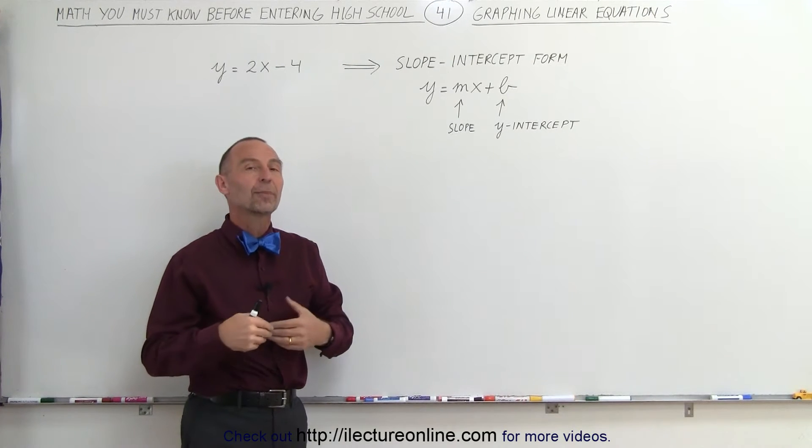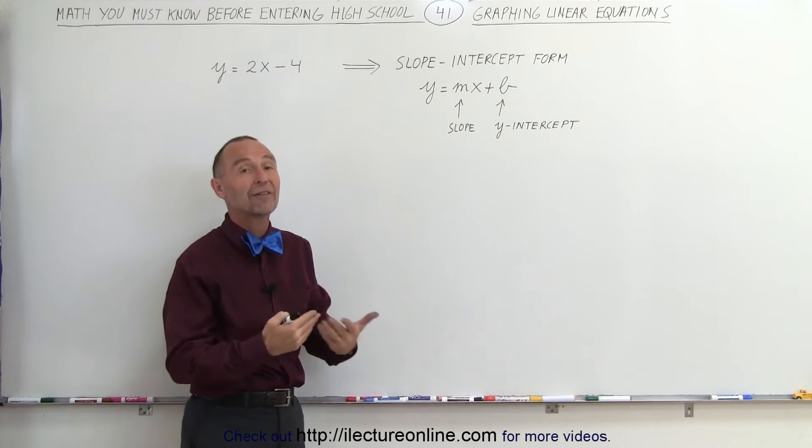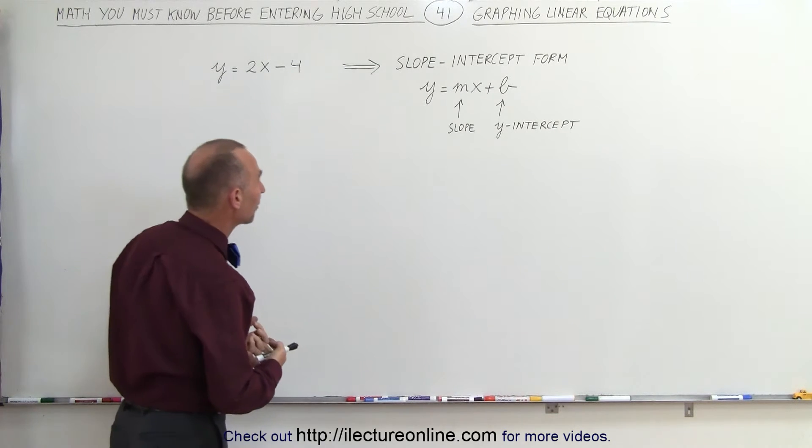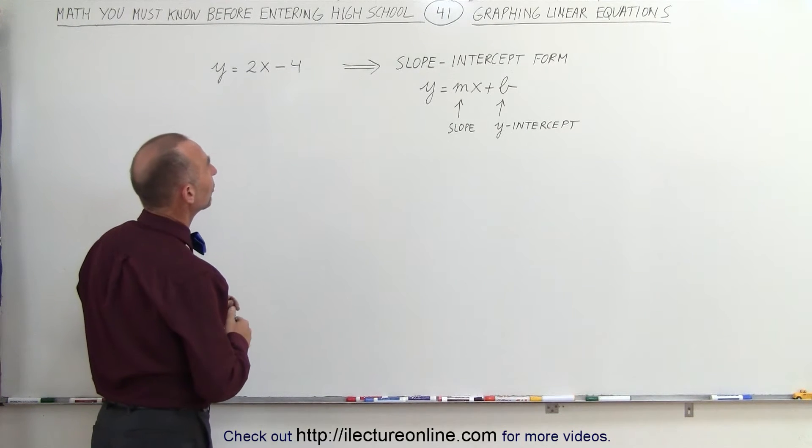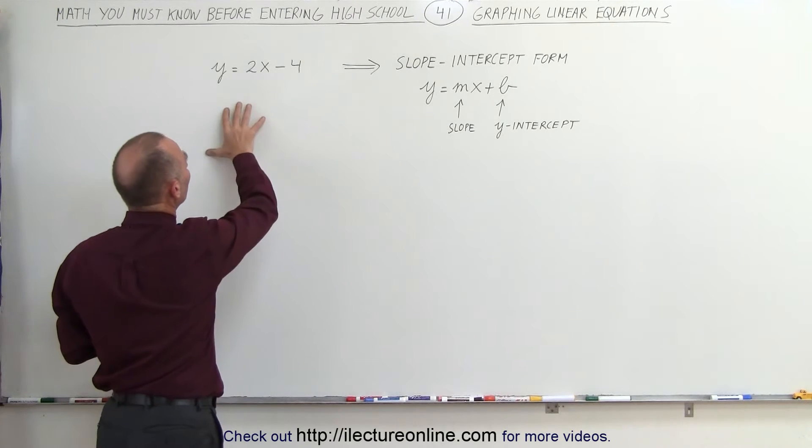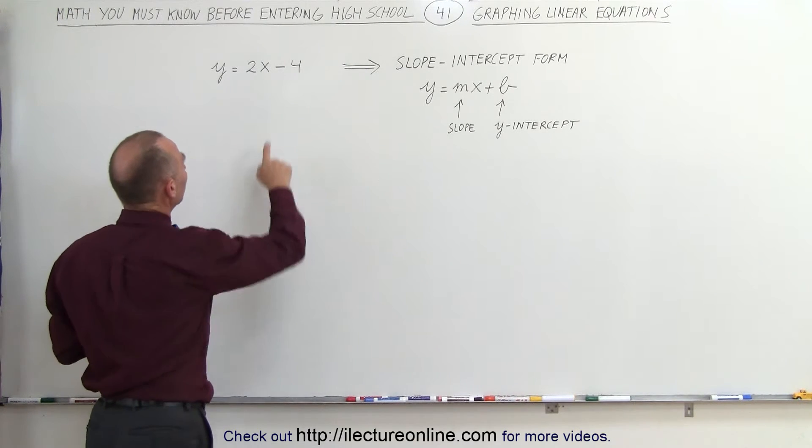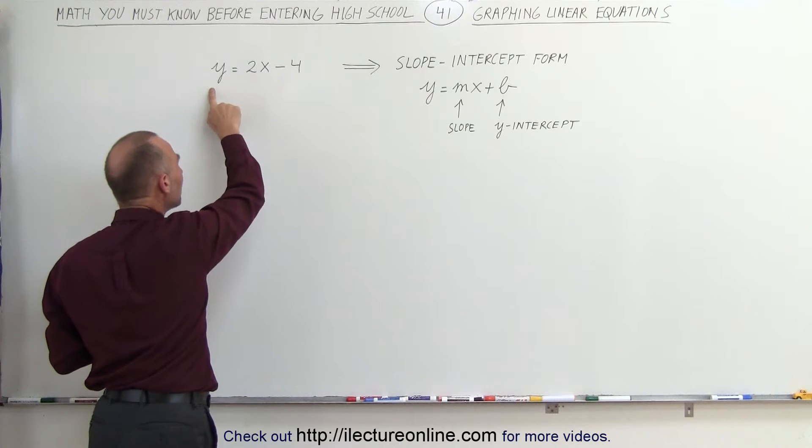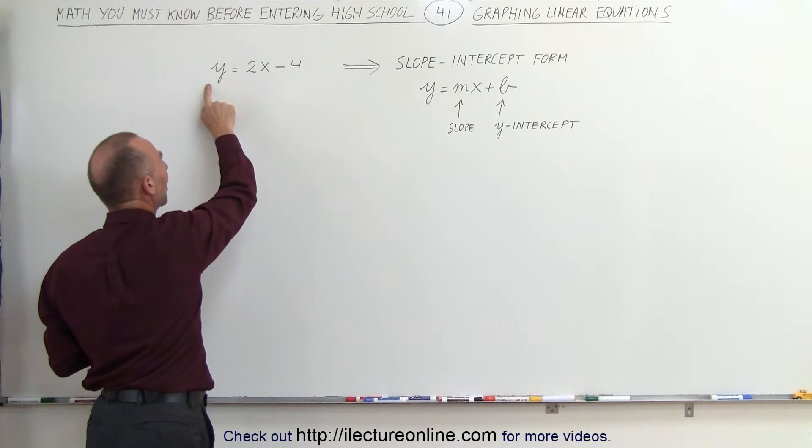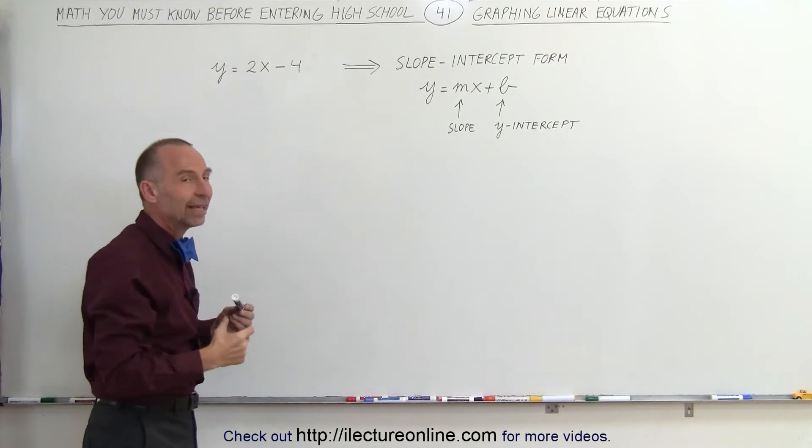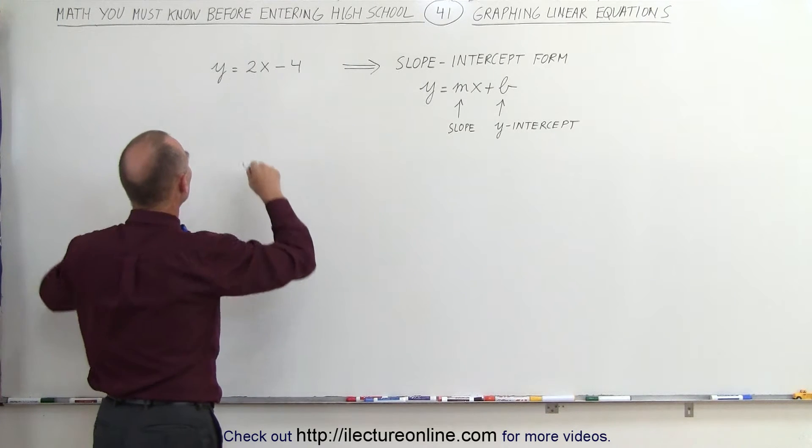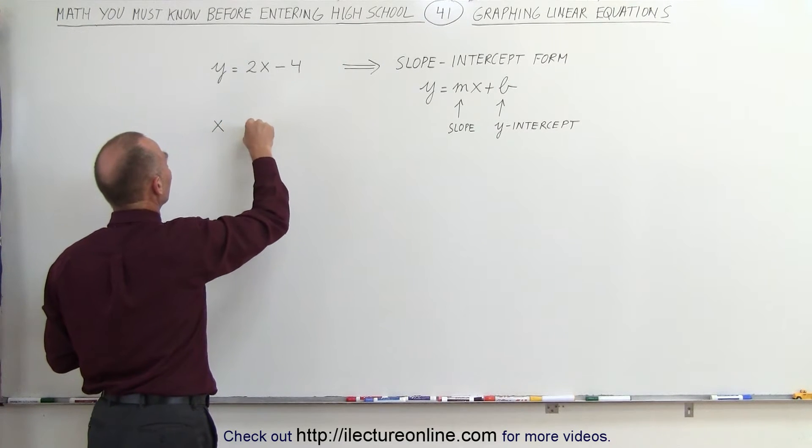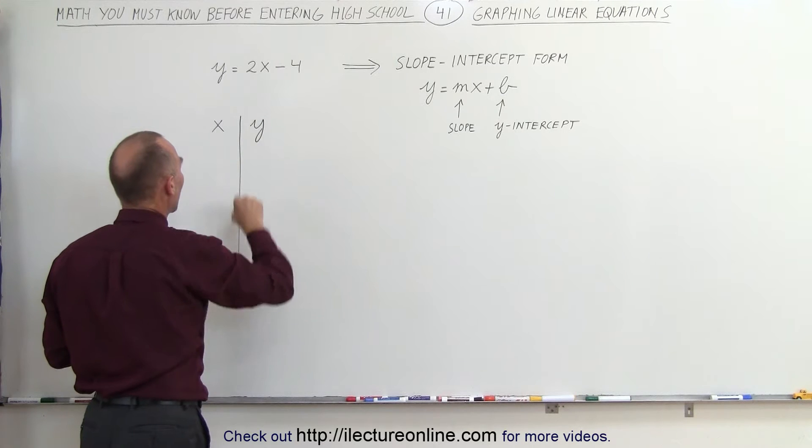We'll learn how to set up a table of values to help us graph things on the xy plane. Since x is the independent variable and y is the dependent variable, the value for y depends upon what we place in for x. We're going to put in certain values for x and see what the corresponding values for y are.